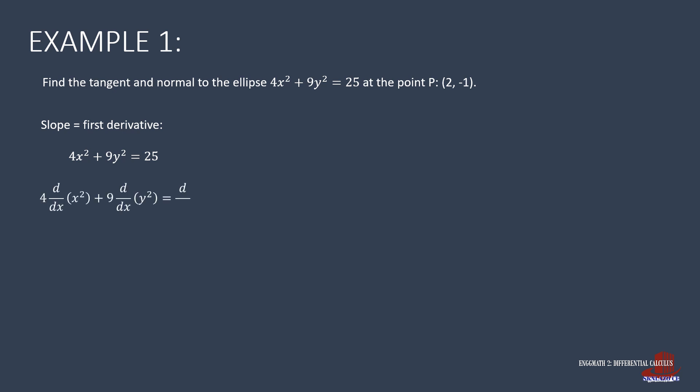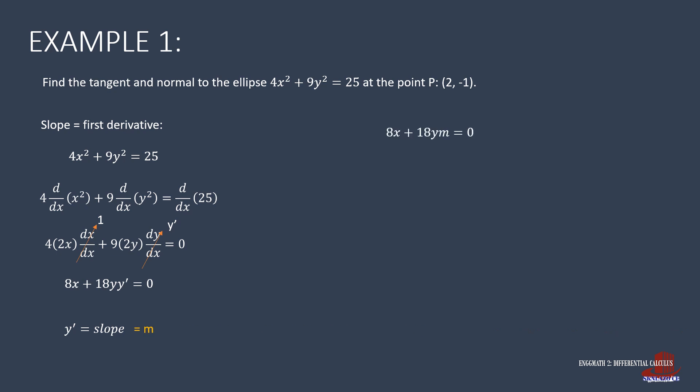Add d/dx to all terms and differentiate, resulting in 4·2x·(dx/dx) + 9·2y·(dy/dx) = 0. Since dx/dx = 1 and dy/dx = y-prime, the simplified equation is 8x + 18y·y-prime = 0. Since y-prime is the slope m, the equation becomes 8x + 18y·m = 0.